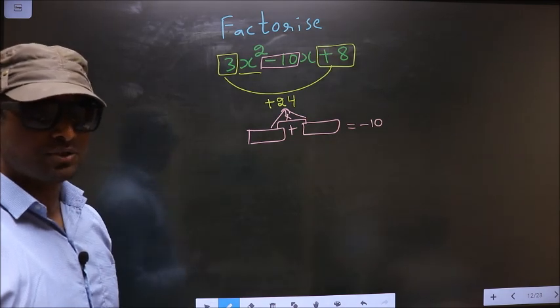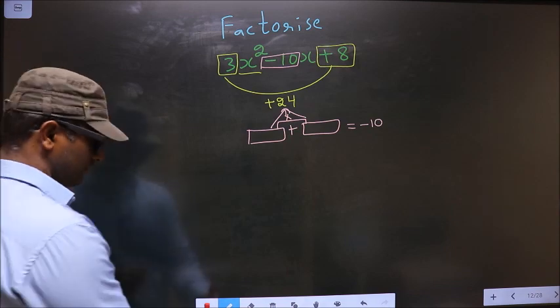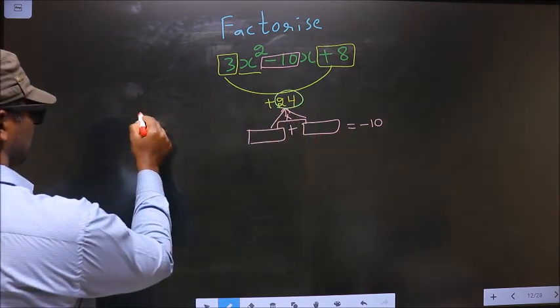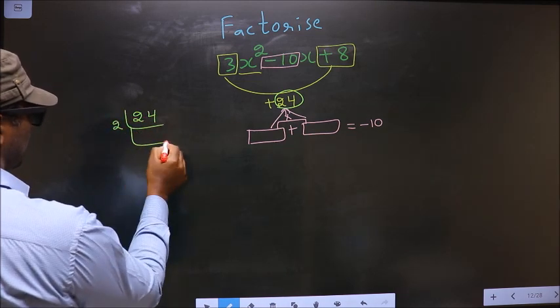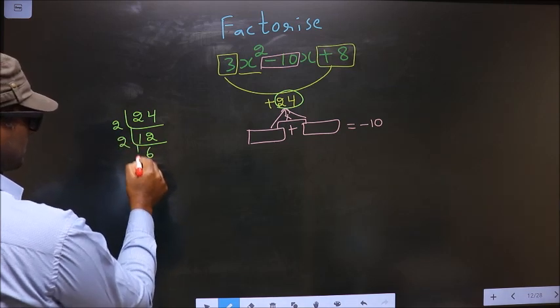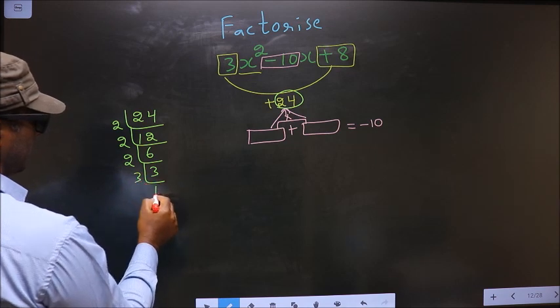To get those two numbers we should take LCM of 24. So I start with 2: 2 1s, 2 2s again 2, 6, again 2, 3. Now 3 and 1.